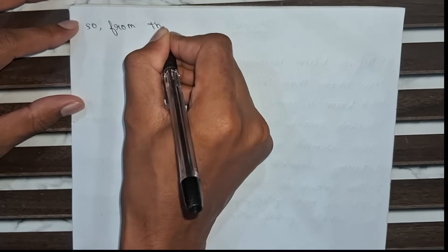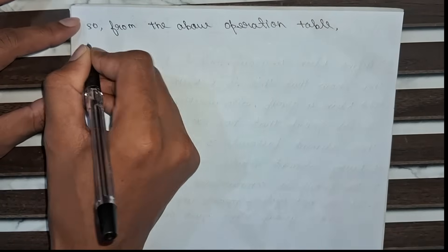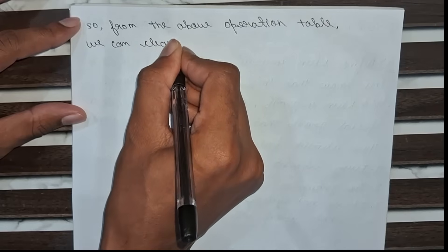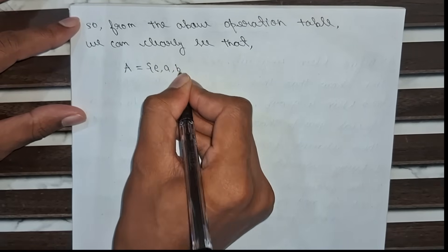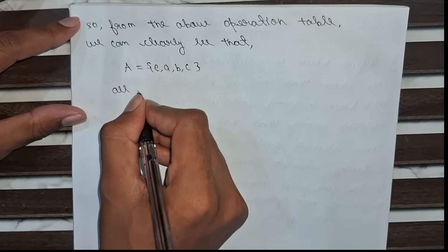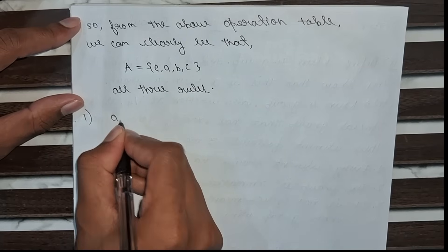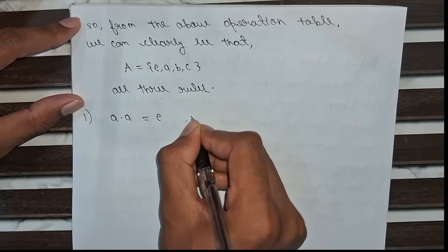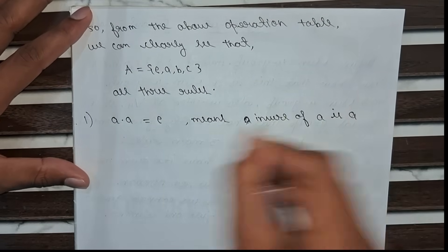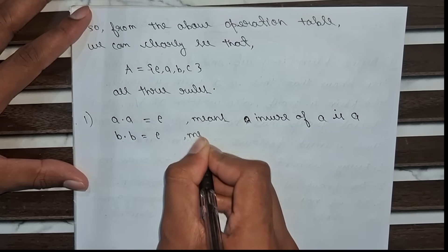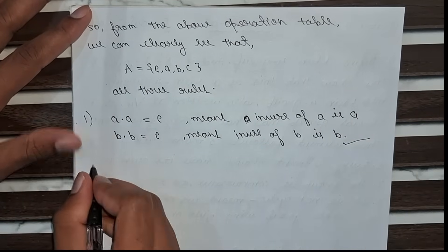From the above operation table we can clearly see that the group A with elements {e, a, b, c} follows all three rules. First, every element has its own inverse: a × a = e means the inverse of a is a; b × b = e means the inverse of b is b. So the first rule is followed.